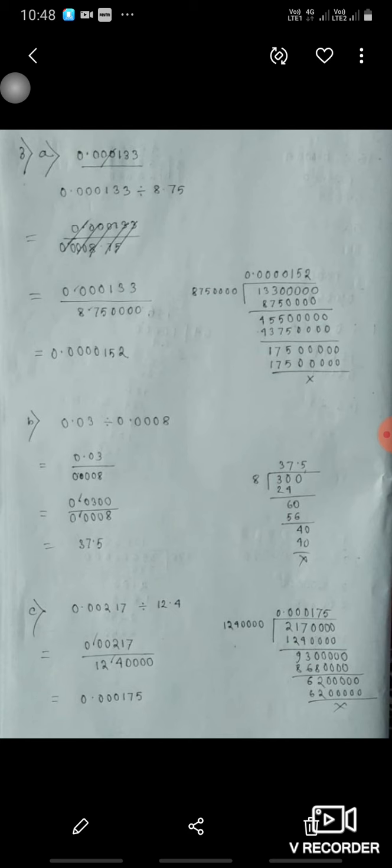Now c part, 0.00217 divided by 12.14 means it will become 217 upon 1,214,000 which will be equal to 0.00175.